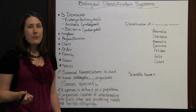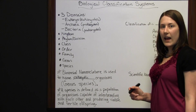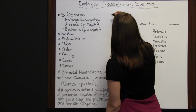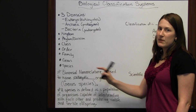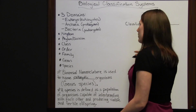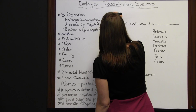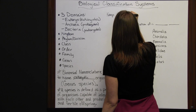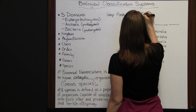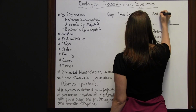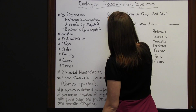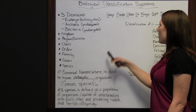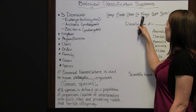Before we look at an example, here's an acronym to help you remember the order of rankings under each domain: kingdom, phylum, class, order, family, genus, species. The helpful saying is: 'Keep ponds clean or frogs get sick.' The first letter of each word reminds you of the order — kingdom, phylum, class, order, family, genus, species.